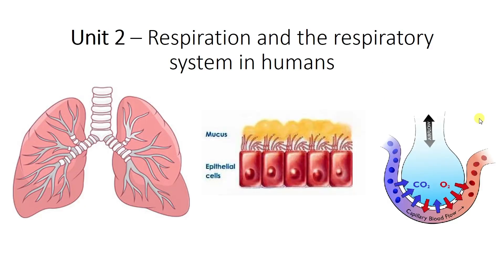So that's it then for the 1.1 unit—cells and the movement across cells. Next time we'll be moving on to a new unit called respiration and the respiratory system in humans, which talks us through the structure of the lungs, how we breathe, how we get oxygen into our body and get carbon dioxide out.